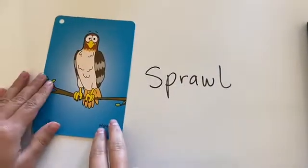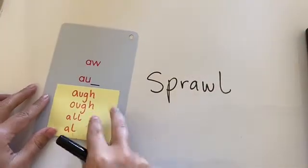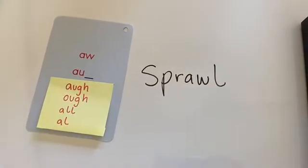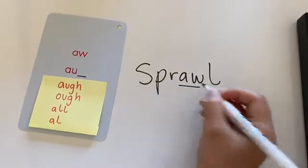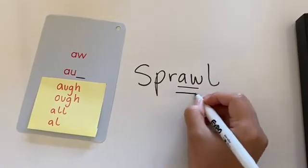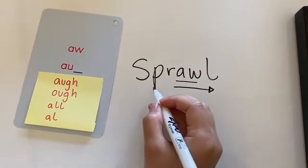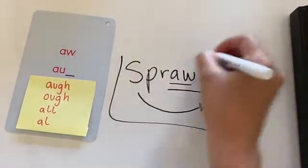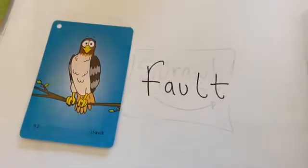Hey second grade. So we're working with the aw sound. I'm going to flip over my card, and I see here that we're still working with that A-W spelling pattern of the aw sound. A-W goes aw. We're going to slide right — aw, aw — add the beginning sounds. Sprawl. Say it fast: sprawl. My word is sprawl. Great job, awesome.